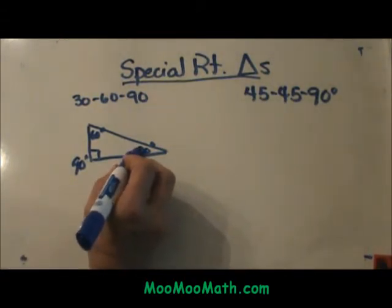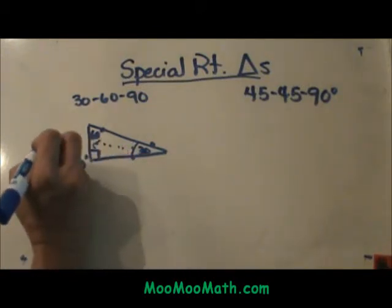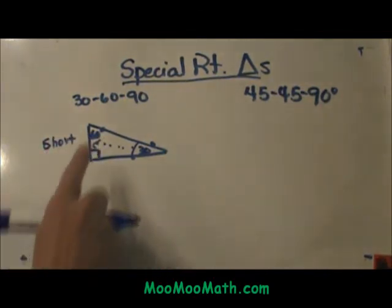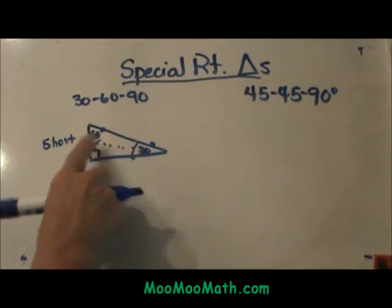Now opposite the smallest angle, opposite the 30 degree angle, is going to be the shorter leg. We do refer to that when we are solving these, so the smallest angle is opposite the smallest side.